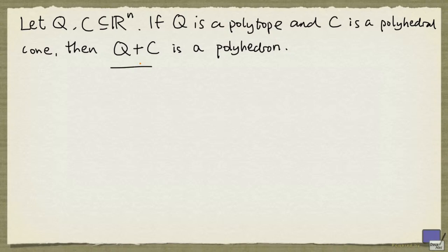Here the plus sign denotes the Minkowski sum of sets. So this is in effect the set of all P plus Q, where P comes from Q, and Q comes from C.